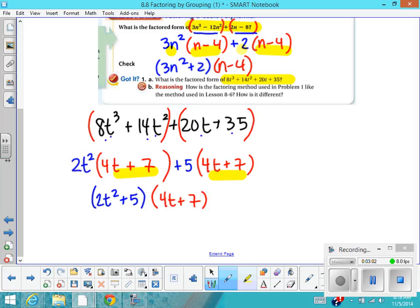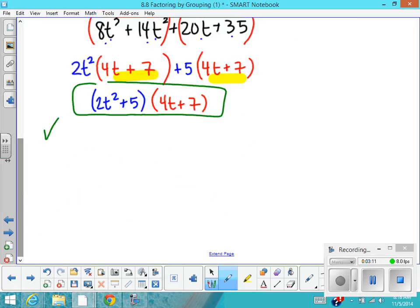So my final answer looks like this: 2t² + 5 times the quantity of 4t + 7. And like everything else, you should just check this using FOIL.